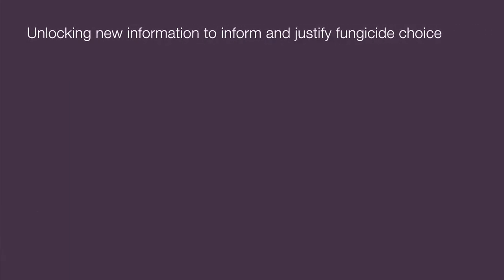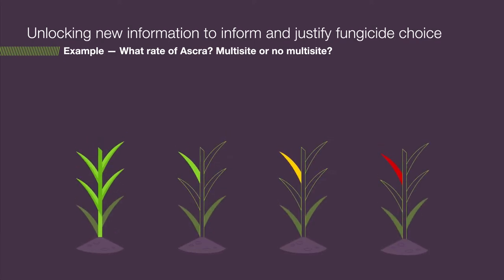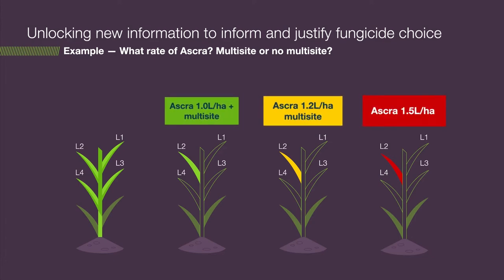This technology is designed to help unlock that unknown by providing you with more information to help inform and justify fungicide choice. For example, if we knew the real levels of disease inside your crop's leaf 2 at the T2 timing, we would be able to use this information to help us choose the most appropriate rate of, for example, ASCRA, and decide whether to use a multisite. This will not only help make your fungicide choice more appropriate, it will also make your spend more appropriate, giving better value for money from your fungicide choice.